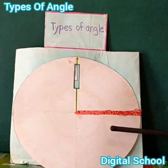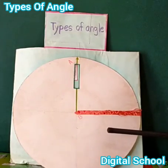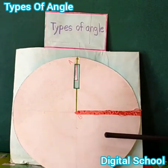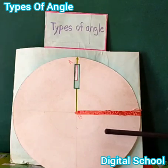Assalamu alaikum, I am Asuna. Today we will learn about types of angle. Dear friends, look at the board. This is a right angle. An angle that measures 90 degrees is called a right angle. In the figure, ABC is called a right angle.